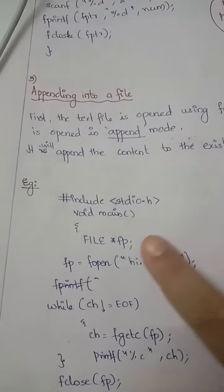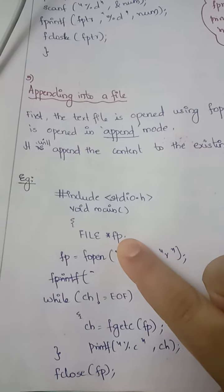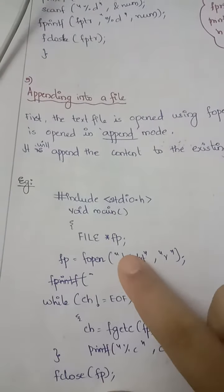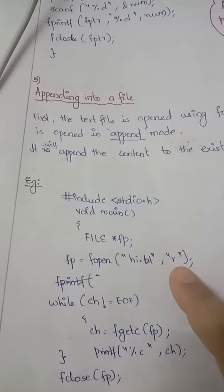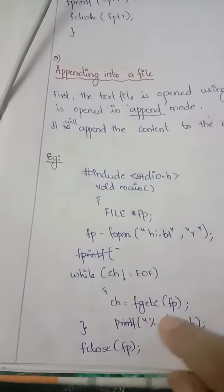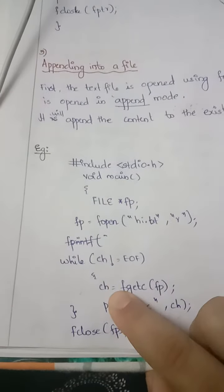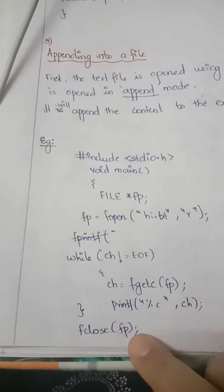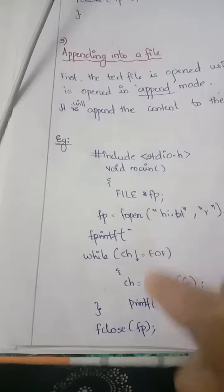We have created a file pointer and are opening the file (hi.txt) in read mode. We're checking whether the character is end of file; until that, we get the character and print it. Then we close the file.